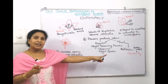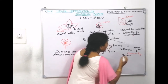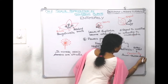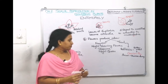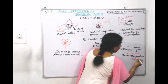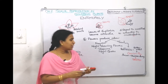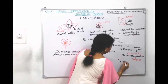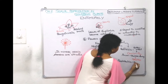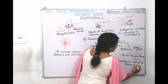Rafflesia gives a rotten meat smell to get pollinated by the carrion fly, which is attracted to that smell. The arum plant produces a human dung smell to get pollinated by beetles. Aristolochia smells like decaying tobacco or decaying humus, and is also pollinated by beetles.